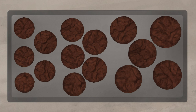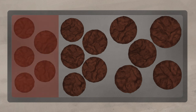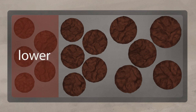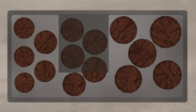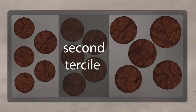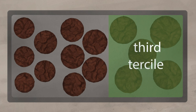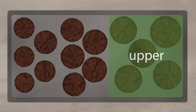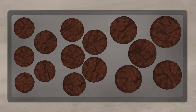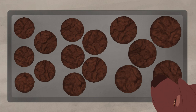Once the biscuits are arranged in order by size, we can then split them into three equal groups, or thirds. This shows us which tersile they fall into. The smallest biscuits fall within the first tersile, which is also called the lower, or bottom, tersile. And the middle-sized biscuits fall into the second, or the middle, tersile. And the largest biscuits fall into the third, or top, or upper, tersile. So now you have the data split into three groups, or tersiles, according to their size. Rusty obviously likes the third tersile.